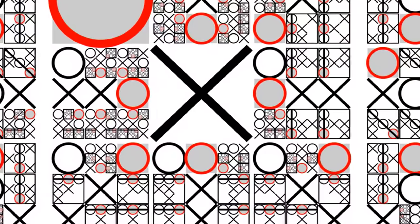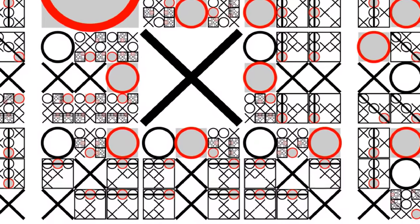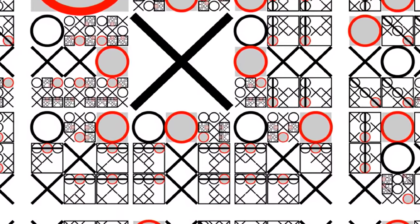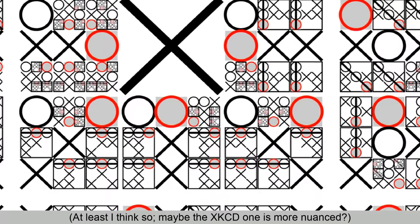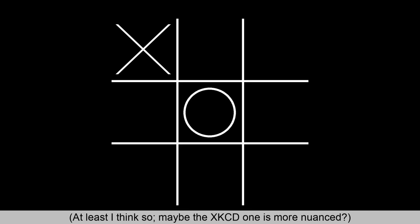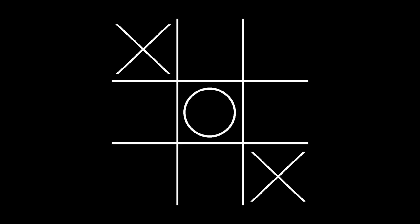I think generally the evidence people give for this comes from those optimal move diagrams, but these diagrams just give the first available optimal move. I am convinced that the corner-center-corner sequence is a pretty shrewd opening strategy for X.